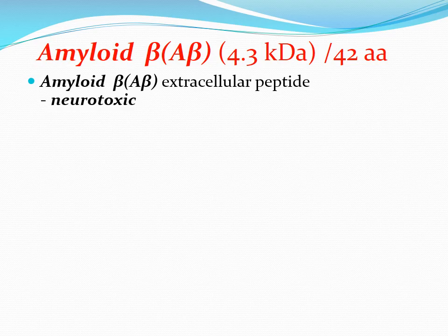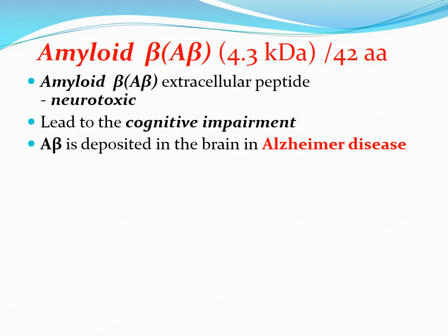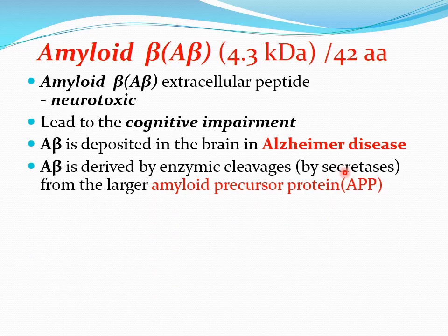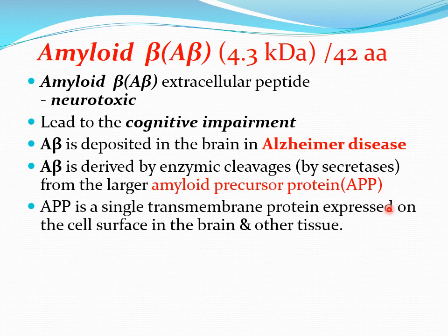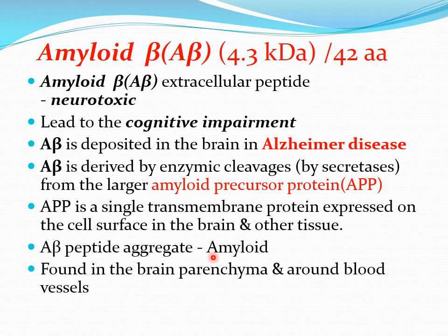Amyloid beta is an extracellular peptide having 42 amino acids. When aggregated in a beta-pleated sheet conformation, it is neurotoxic and leads to the cognitive impairment which is characteristic of the disease. The amyloid beta deposited in the brain in Alzheimer's disease is derived by enzymatic cleavages by secretases from the larger amyloid precursor protein. Amyloid precursor protein is a single transmembrane protein expressed on the cell surface in the brain and other tissues. The amyloid beta peptide aggregates, generating the amyloid found in the brain parenchyma and around blood vessels.